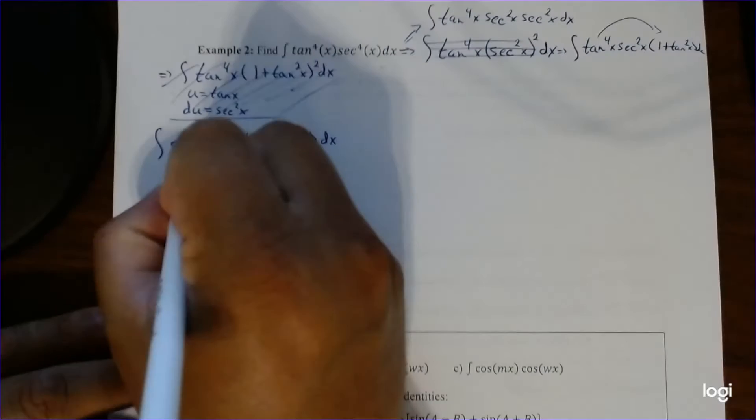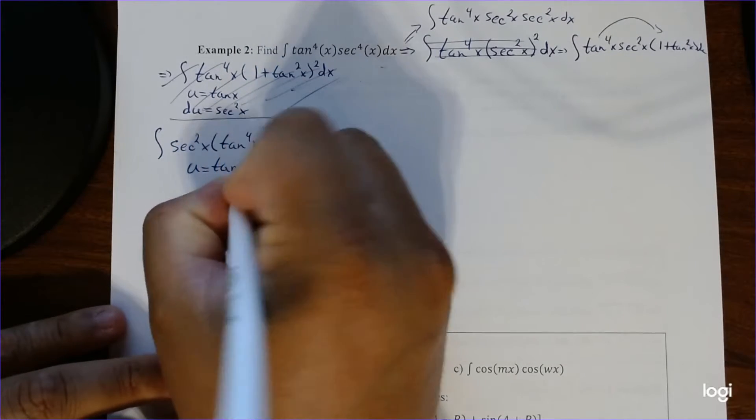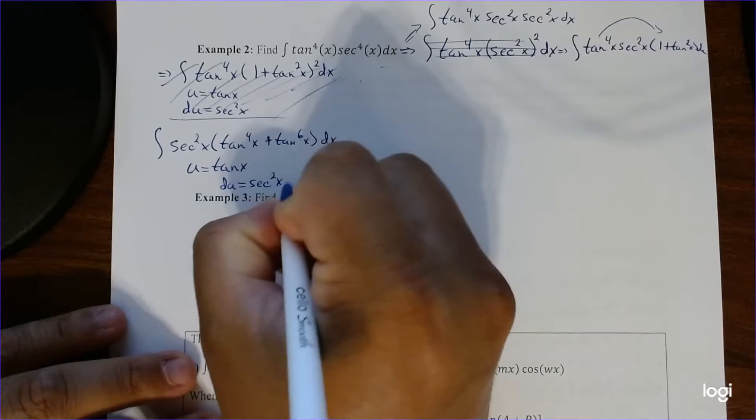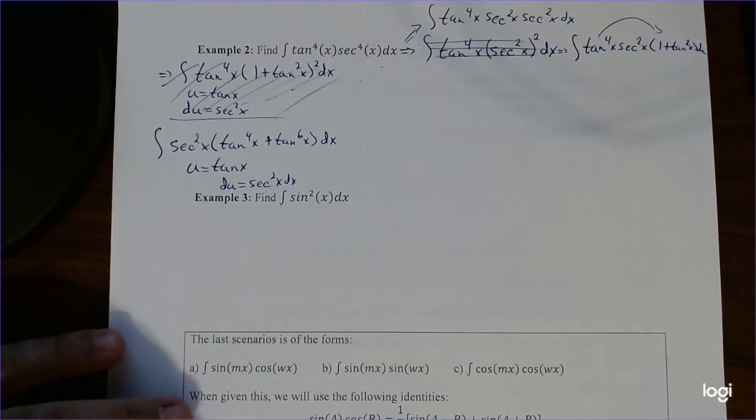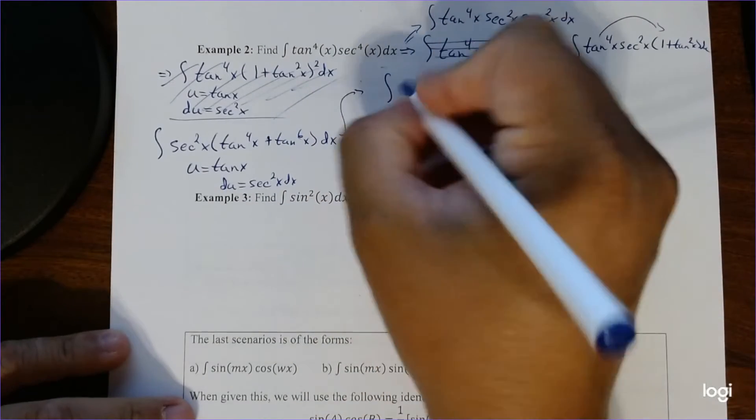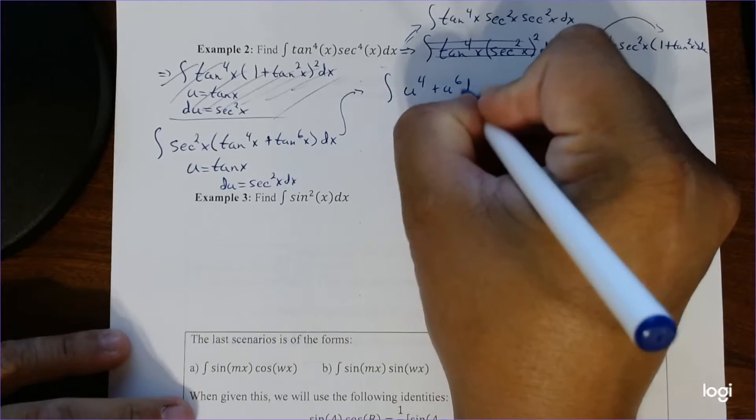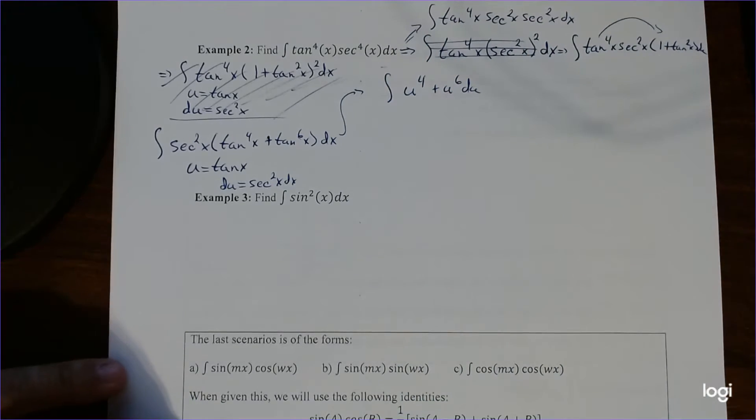So we're going to let u now equal tangent, and now this works out because that secant squared now ends up getting engulfed in our u substitution. So this ends up being the integral of u to the 4th plus u to the 6th, which again, much easier to deal with.